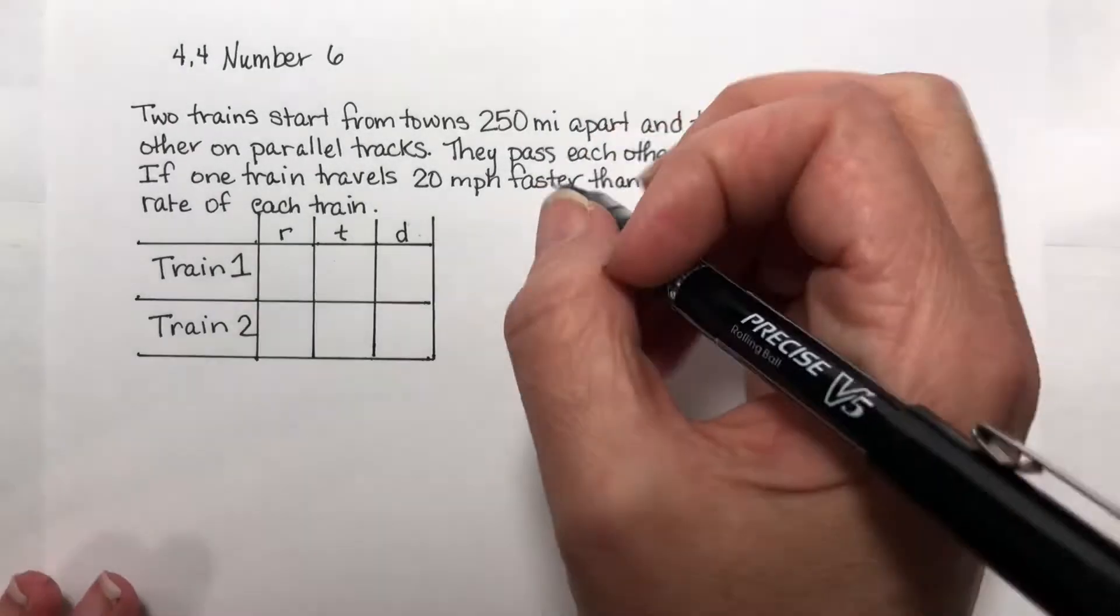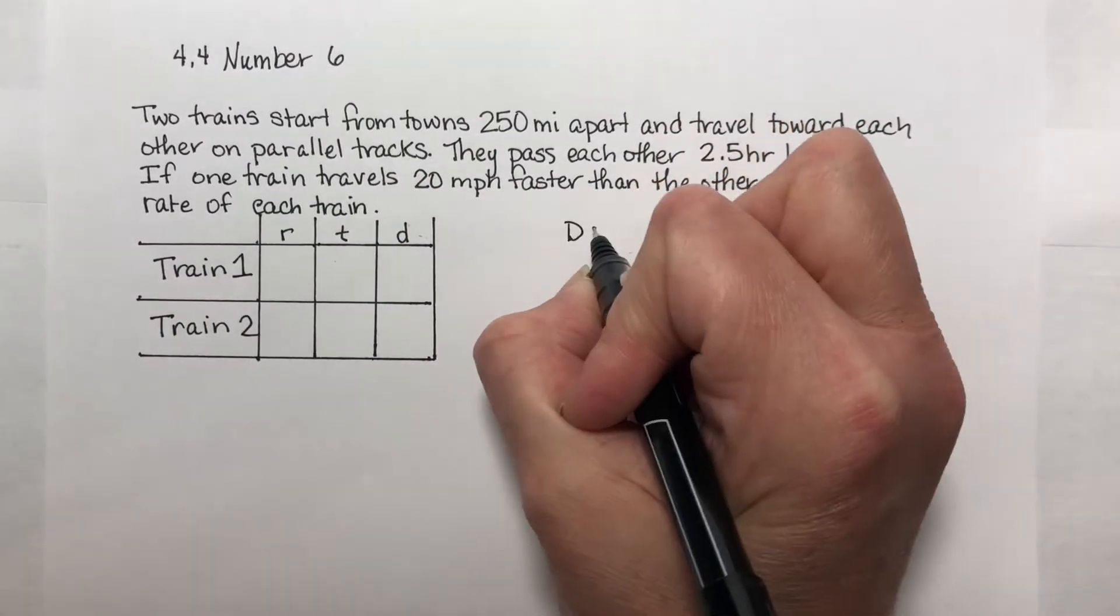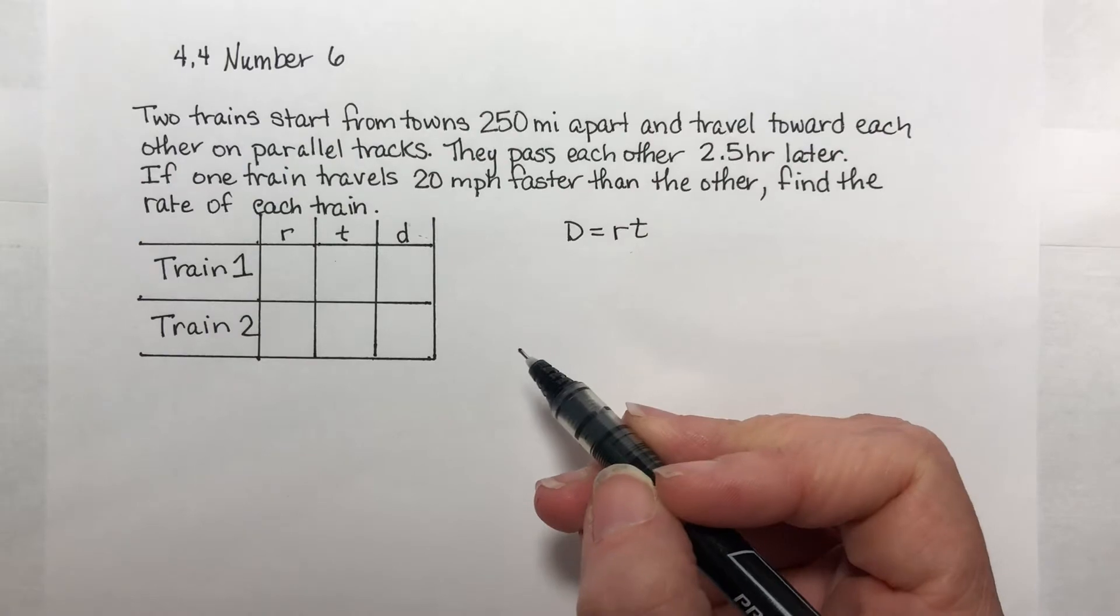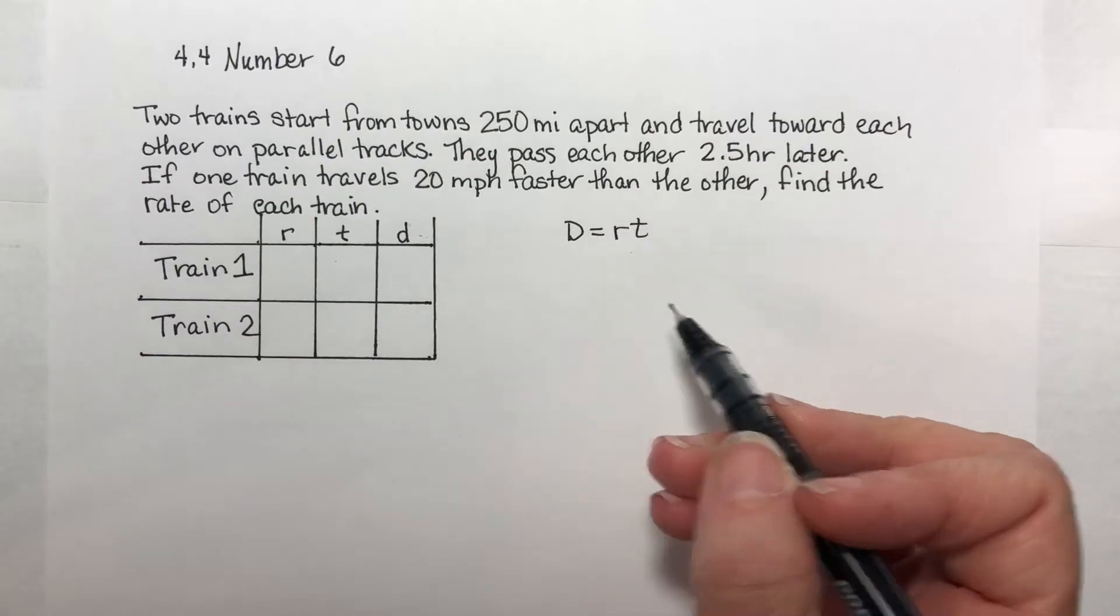This is a distance problem and distance problems always use the formula D equals RT. Distance equals rate times time. Always, every time.